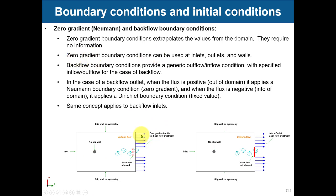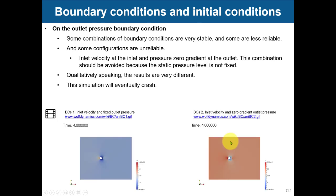At outlets you can have things like vortices because flow can come back into your domain, and that can give you problems. To deal with that, there is a specific condition called backflow. You can use zero gradient with no problem, but it is better to use the backflow treatment. When you use backflow and flow is coming back into your domain, it blocks the flow and only lets it go out.